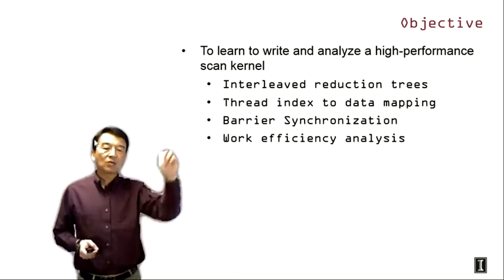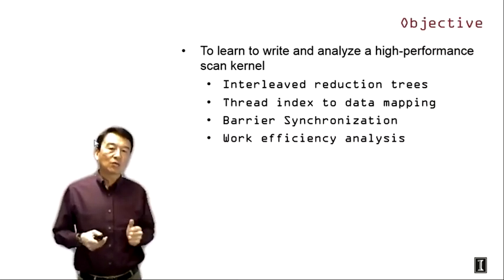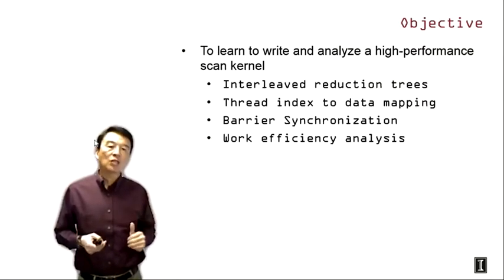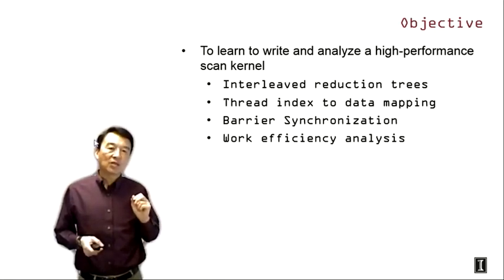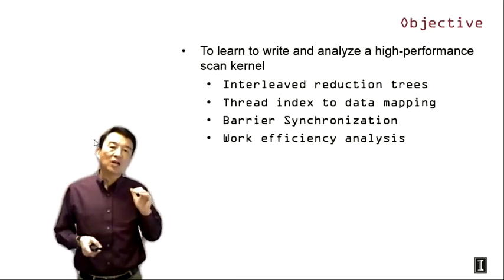We're going to show the thread index to data mapping to minimize divergence. We're going to show some more intricate use of various synchronization, and then we're going to do some work efficiency analysis to show that this kernel is work inefficient. However, the kernel does find practical use in situations where the number of elements is small enough and there's enough hardware. It does offer good performance in quite a few situations.